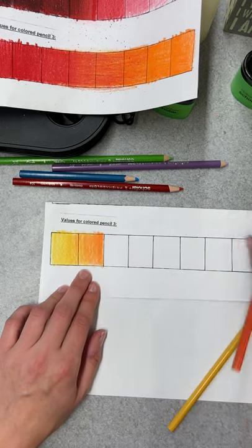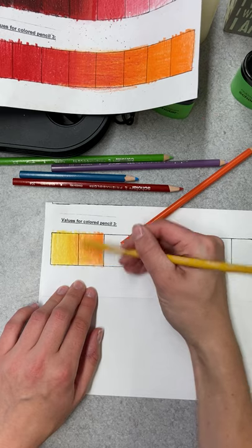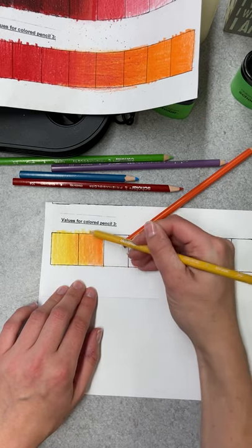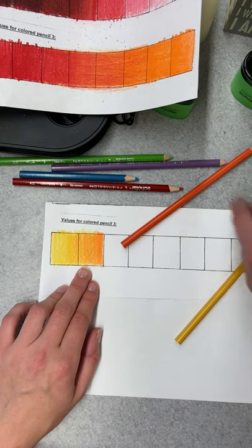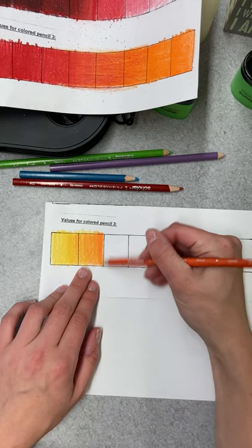And I can use that lightest color as my blender again. So I could use the yellow, I could use a white pencil, or I could use the colorless pencil, whatever works for you. So I have my first one done. Then I'm gonna go orange into red.